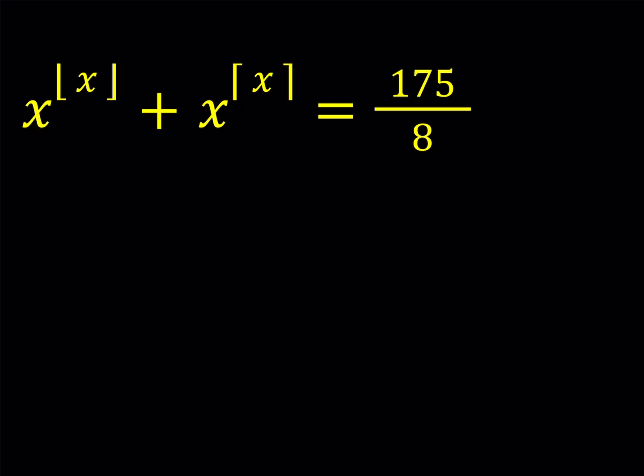First of all, notice that the floor value rounds the number down and the ceiling value rounds it up. So we're talking about the same number. So exponents are going to be integers. Second, you probably noticed that if x is an integer, this is not going to work because you're adding two integers, you will never get 175 over 8. So what are we supposed to do? We're going to test non-integer values.